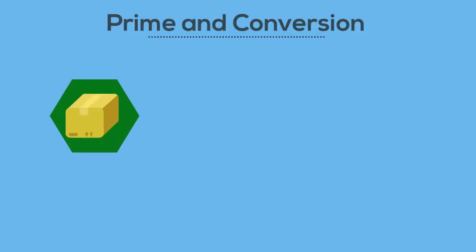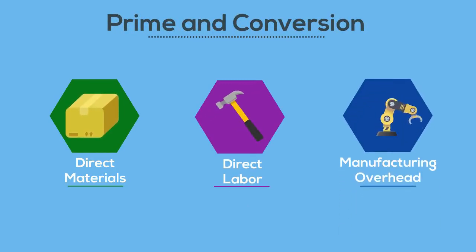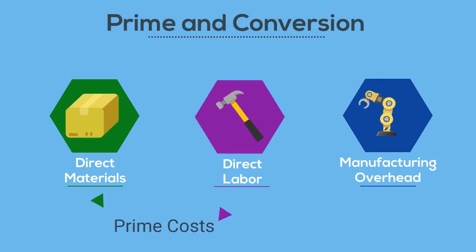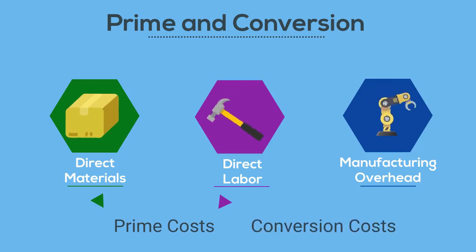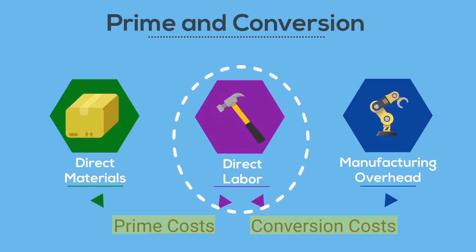We can also take these three manufacturing costs and categorize them as prime or conversion costs. Prime costs are direct manufacturing costs — this would be direct materials and direct labor. Conversion costs are the costs required to convert direct materials into a finished product — this would be direct labor and manufacturing overhead. Be careful: direct labor is both a prime and a conversion cost. These two classifications are not separate or mutually exclusive; they both contain one component that is the same.